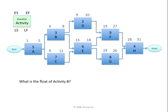The next question: what is the float of activity B? First, let's ask what does the word float really mean. For me, float means flexibility. When we think of the critical path method, float is the difference between the late numbers and the early numbers. Therefore, to calculate float, we need to do a backward pass, at least as far as activity B.